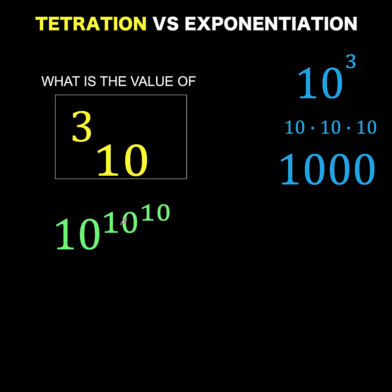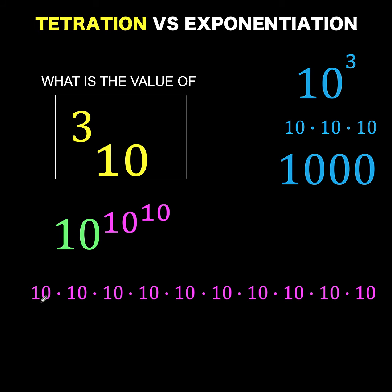But how do we evaluate a power tower? Are we going to start with the base and go all the way up to the topmost exponent, or start with the topmost exponent and continue evaluating down to the base? The answer is we start with the uppermost exponent and go all the way down. So we start by evaluating 10 to the 10th, which is 10 multiplied 10 times, equal to 10 billion.